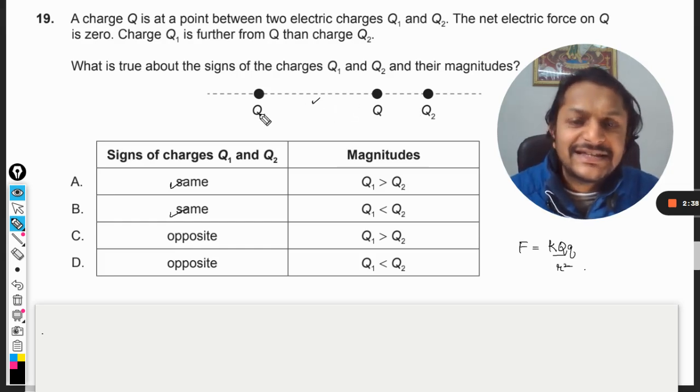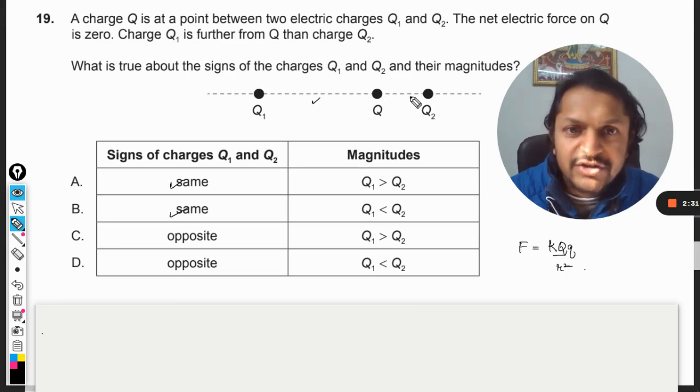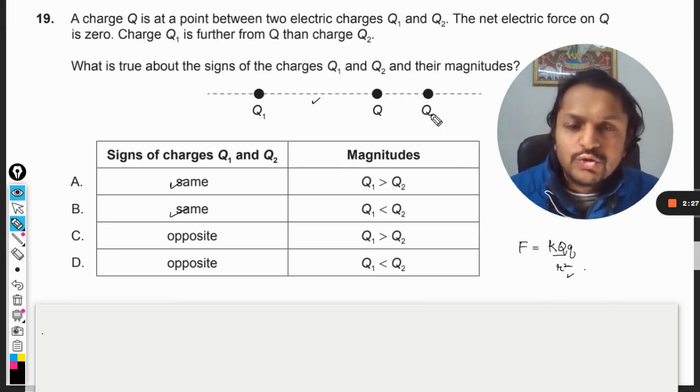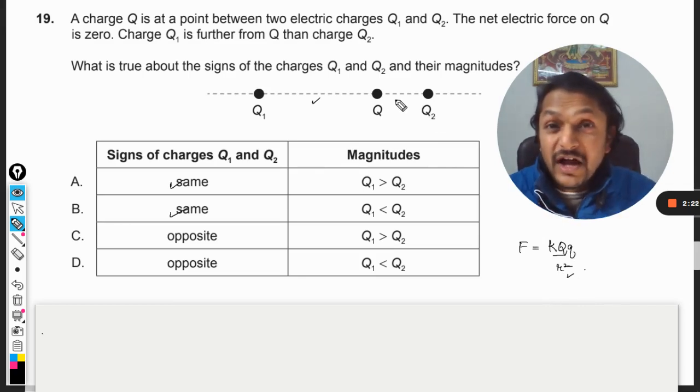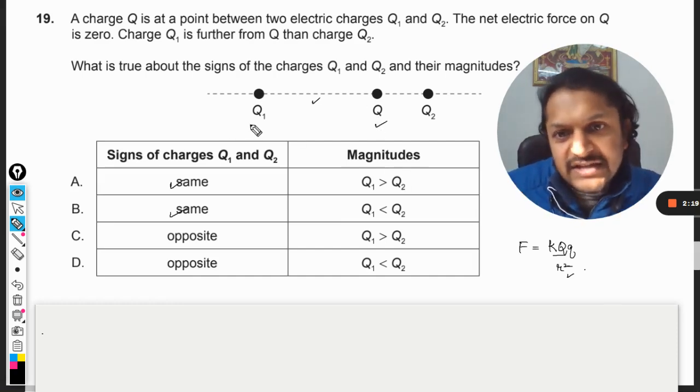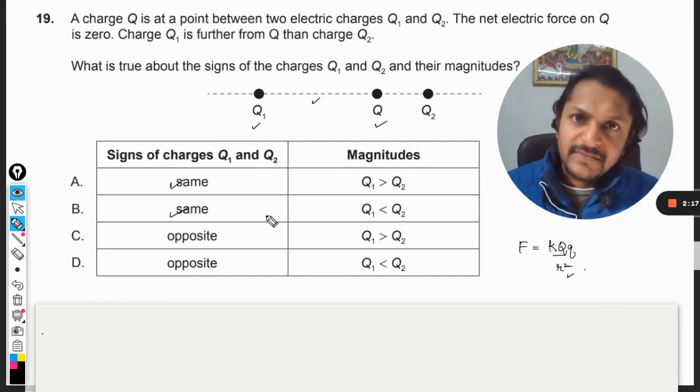And q2 have to be lesser because it is nearer to this. If r is lesser, this charge q2 have to be lesser, otherwise the force will become very large because it is near to it. This charge is away from this charge.